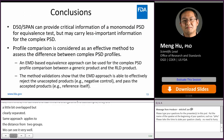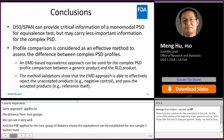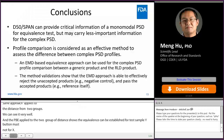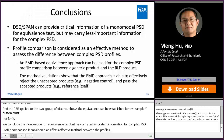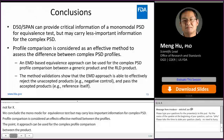Based on the above analysis, we conclude that D50 and span can provide critical information for monomodal PSD equivalence testing but may carry less important information for complex PSD. Profile comparison is considered an effective method to assess differences between complex PSD profiles. The EMD-based equivalence approach can be used for complex PSD profile comparison between a generic product and RLD product. Method validation shows the EMD-based approach is able to effectively reject unacceptable products, such as the negative control, and pass acceptable products such as the RLD itself.